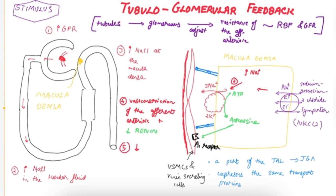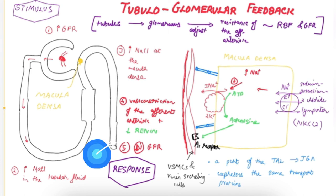Hence the GFR now becomes normal. The stimulus was increasing GFR; by sensing the sodium chloride level at the macula densa and by release of adenosine, the GFR is brought back towards normal. So the response to increased GFR is decreased GFR, achieved by adenosine changing the resistance of the afferent arteriole and bringing renal blood flow and GFR back towards normal.